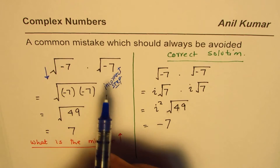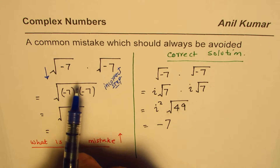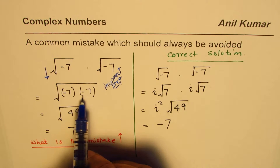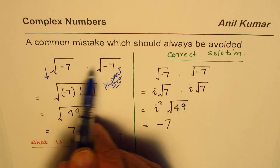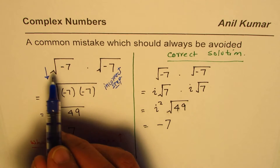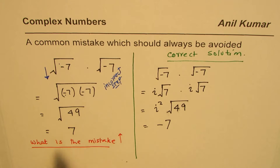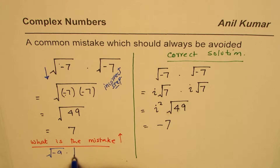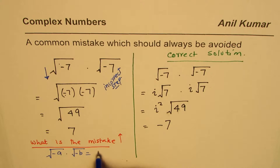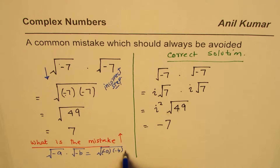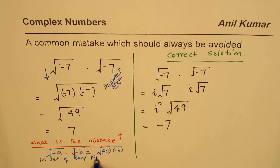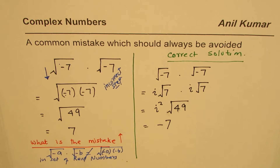When working with square roots of negative numbers, you cannot multiply them and write as a single product under the radical. This is only possible when working in the set of real numbers. In general, square root of minus a times square root of minus b cannot be written as square root of minus a times minus b — that step is not valid.